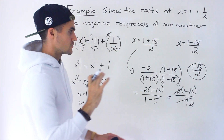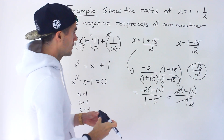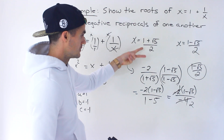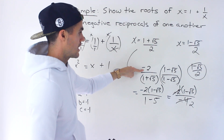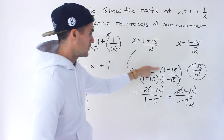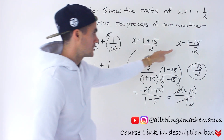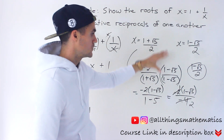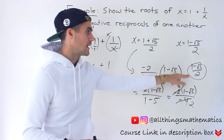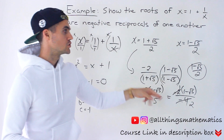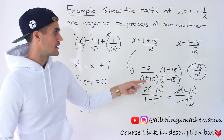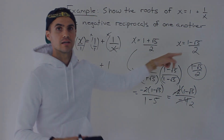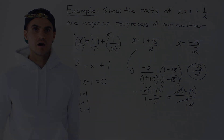To show these are negative reciprocals of one another, I took the first root, flipped it, changed the sign, and then showed — using rationalization — that the resulting expression equals the other root. That confirms that the negative reciprocal of one root is indeed the other root.